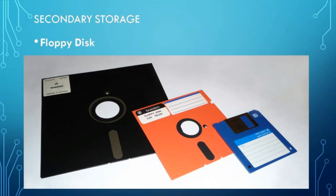Secondary Storage. Secondary storage devices store data as per the user's request. The main memory does not store data permanently. Due to this limitation, secondary memory devices have been developed. These devices are also called as auxiliary memory or external memory. They have large storage capacity. The typical examples for secondary storage devices are floppy disk, hard disk and compact disk.